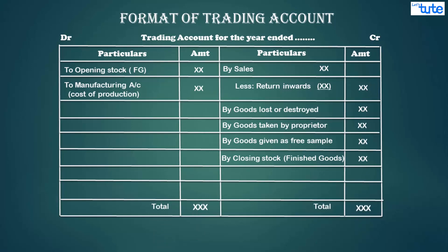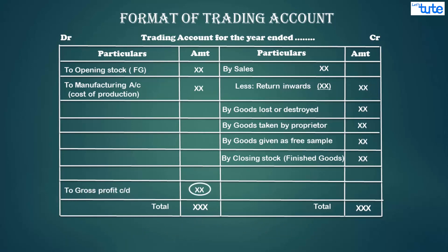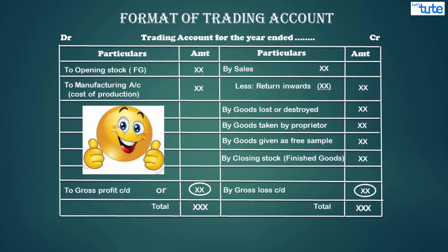The final result — gross profit or loss — is found by balancing the debit and credit figures. If the credit side is bigger, the value of sales is more than the cost of goods produced and sold, which is known as gross profit earned by the businessman. This gross profit is written on the debit side and carried down to the profit and loss account. If the debit side is bigger, the cost of manufacture exceeds the value of sales — this is known as gross loss — and the amount is written on the credit side and carried down to the debit side of the profit and loss account.